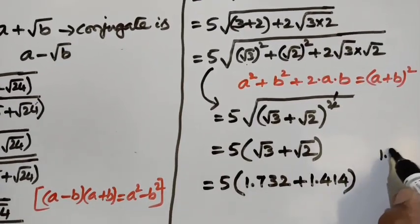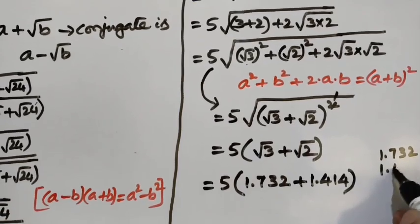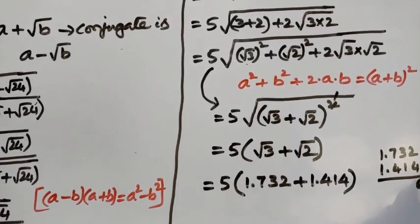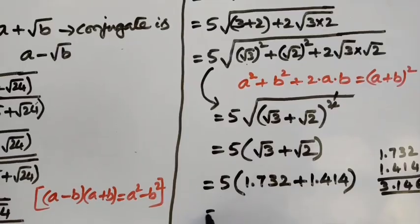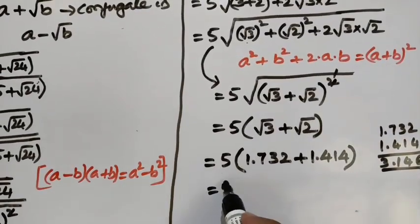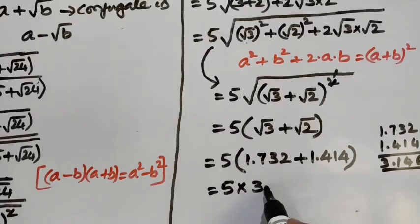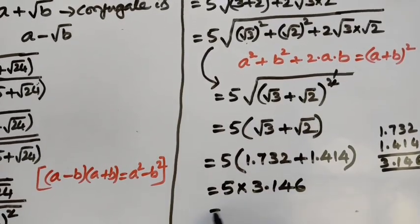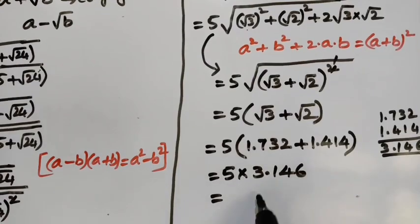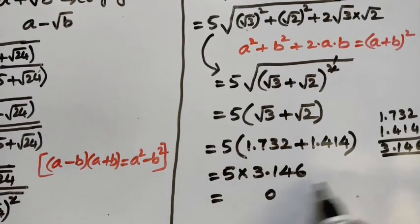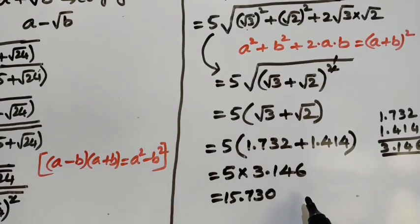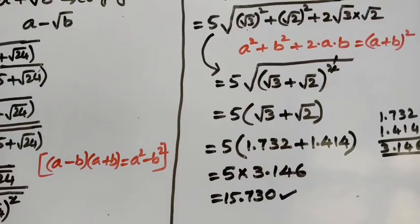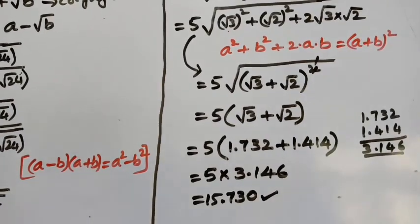Adding 1.732 and 1.414 gives 3.146. So 5 into 3.146 gives approximately 15.73. So the final answer is approximately 15.73. If you like this solution, please subscribe to my channel.